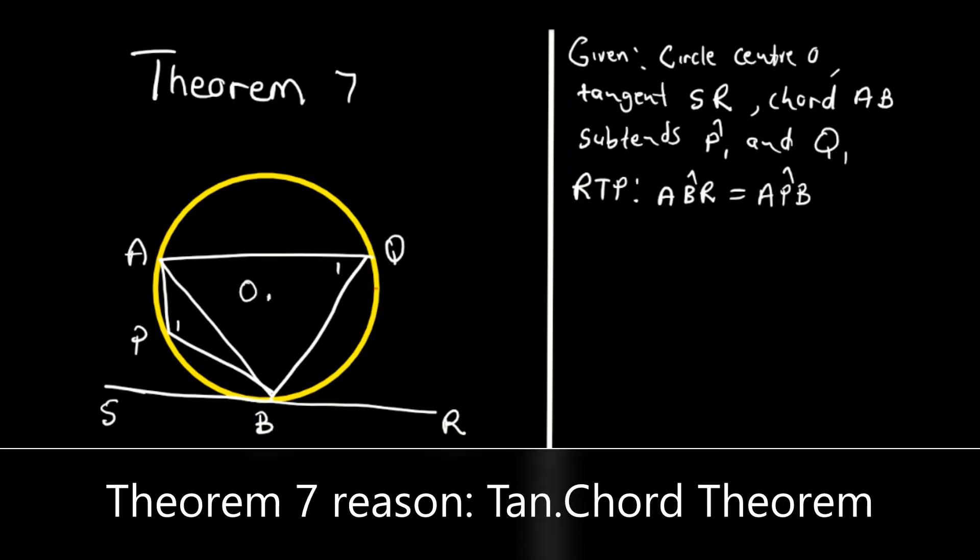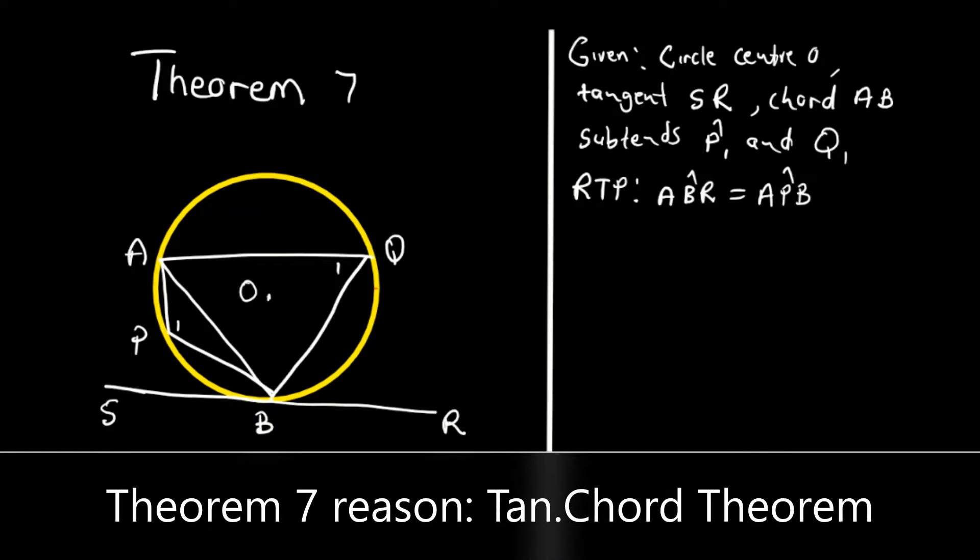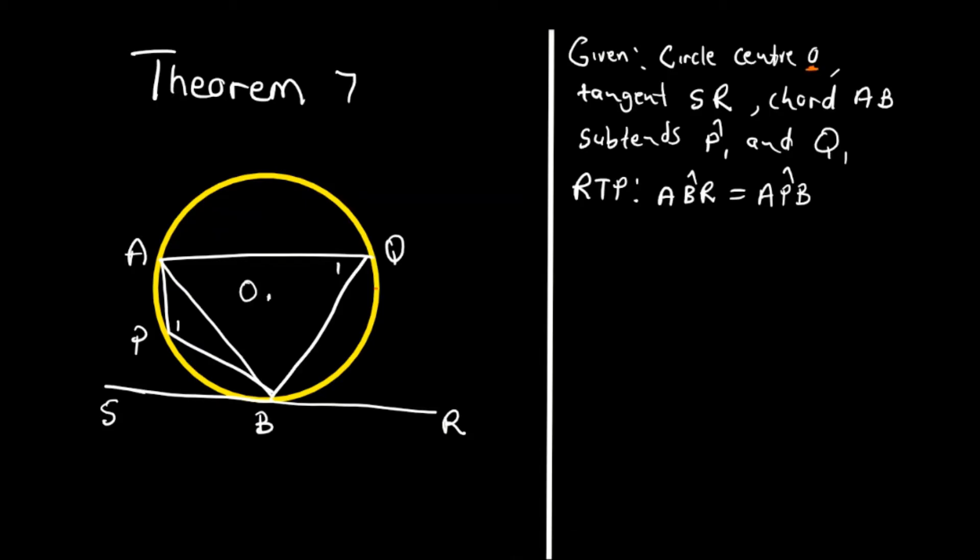We are doing Theorem 7, and we are given a circle with center O, having tangent SR, chord AB, which subtends P1 and Q1.